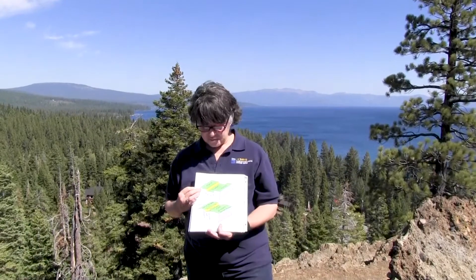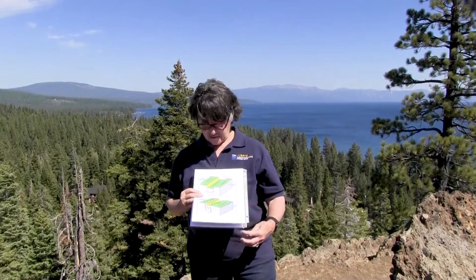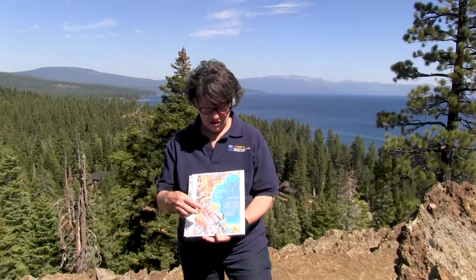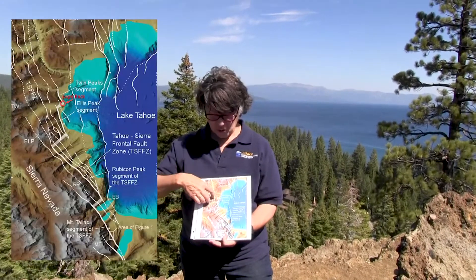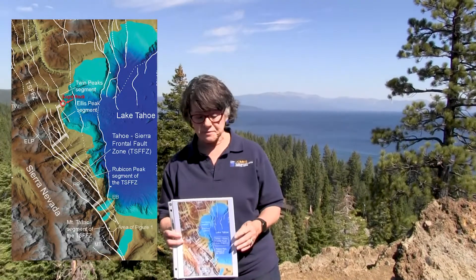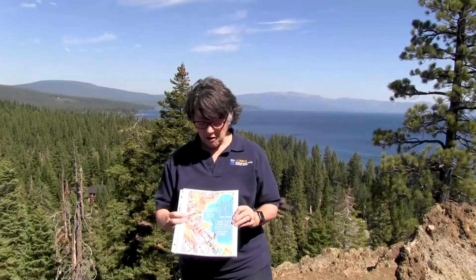This lake, Lake Tahoe, lies in an asymmetric half-graben. A half-graben is just a graben that has a fault on just one side, and the fault on the west side of Lake Tahoe is the Tahoe Sierra Frontal Fault Zone. The Tahoe Sierra Frontal Fault Zone is a zone of faults — you see these white strands here — that runs between a half and five miles west of Lake Tahoe.